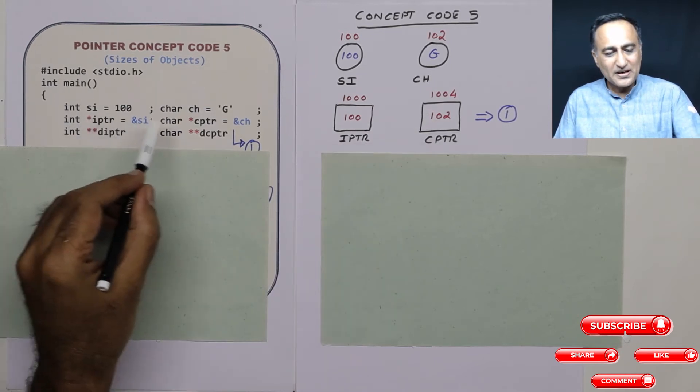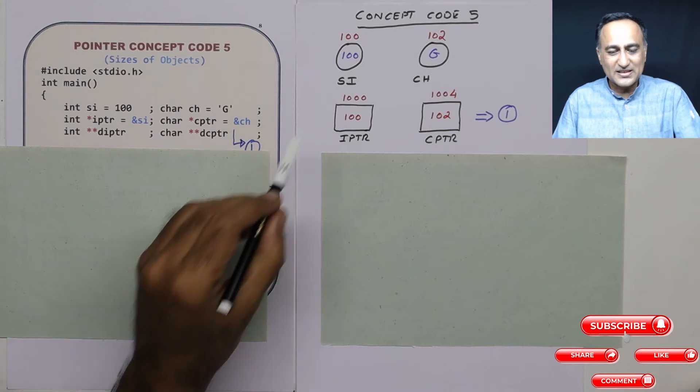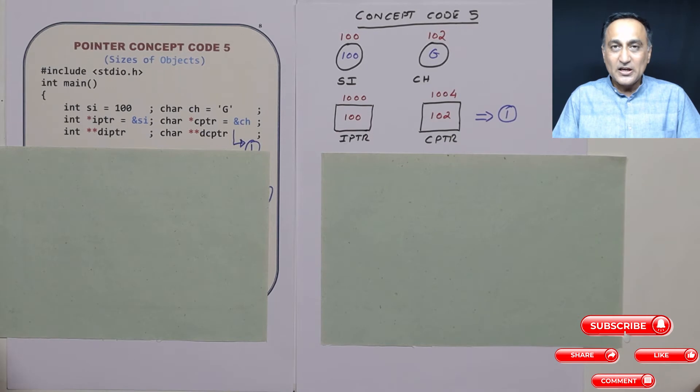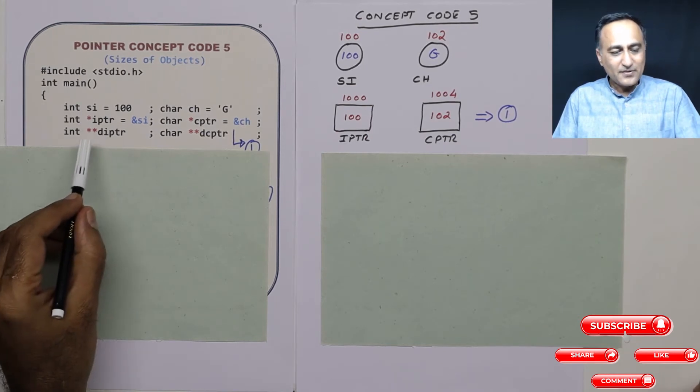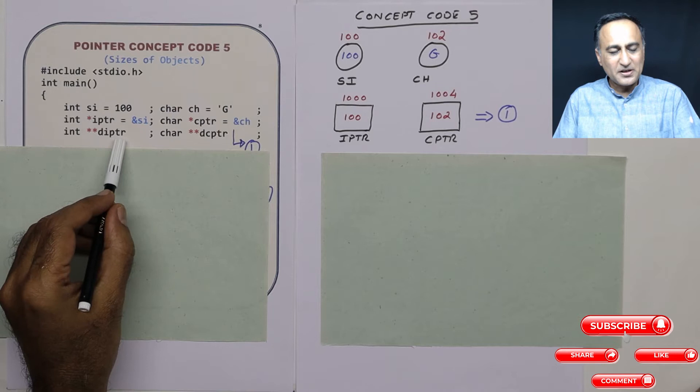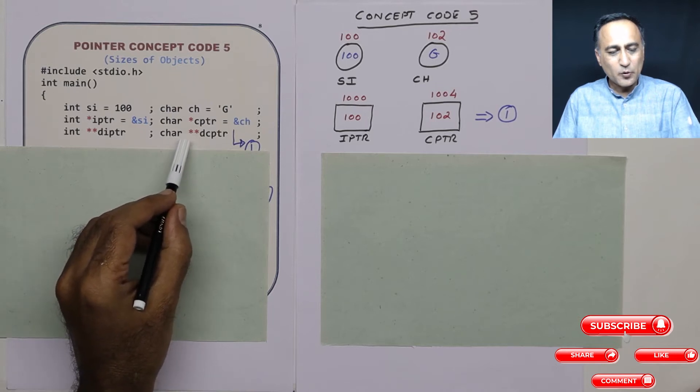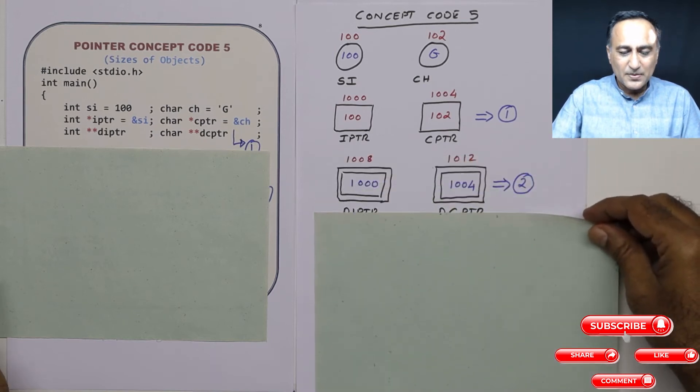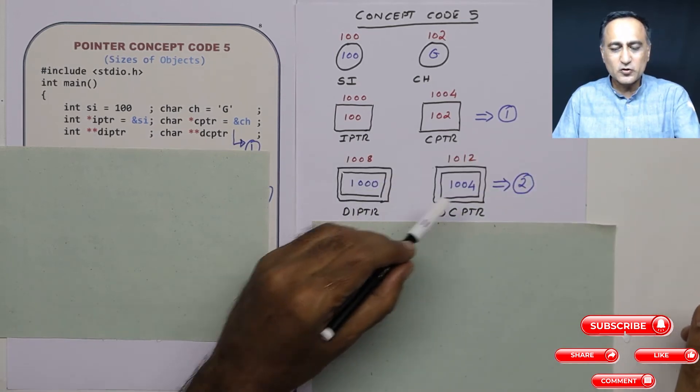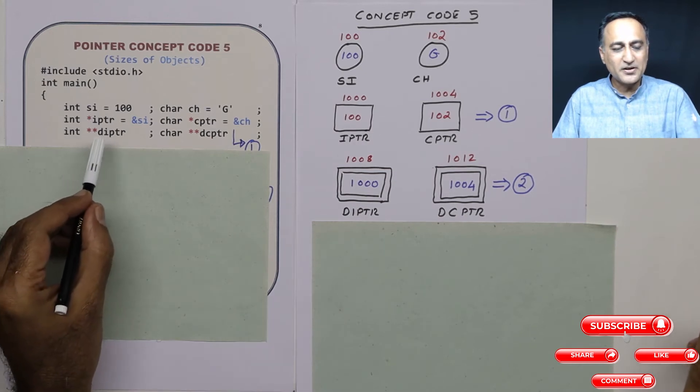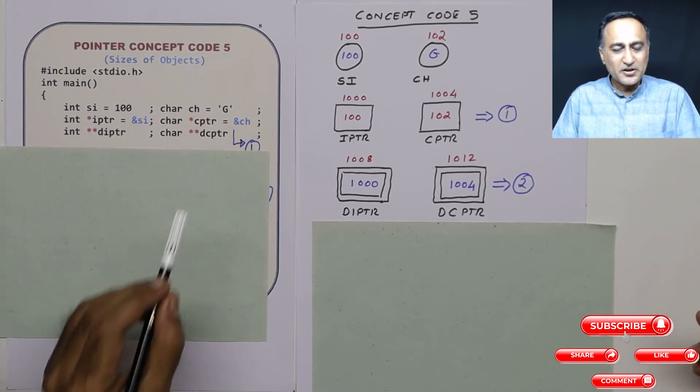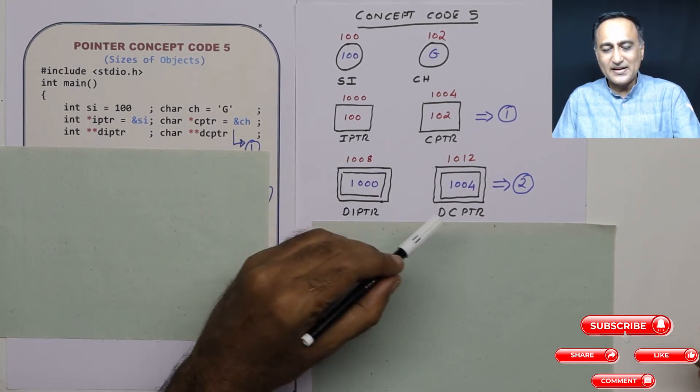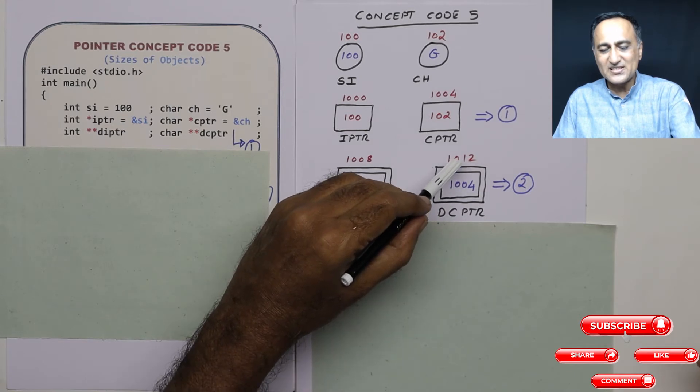Now both iptr and cptr themselves being variables, they have addresses 1000 and 1004 respectively. Now after that I have int pointer to a pointer di ptr and char pointer to a pointer dc ptr. How I am representing them? I am representing them using double boxes so that you understand that they are a pointer to a pointer. Since they are a pointer to a pointer, di ptr we will assume exists at address 1008, dc ptr exists at address 1012.